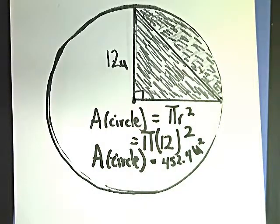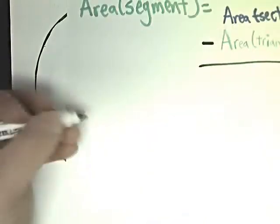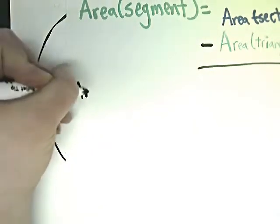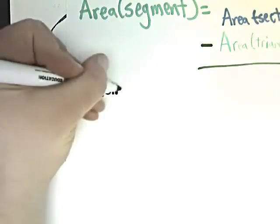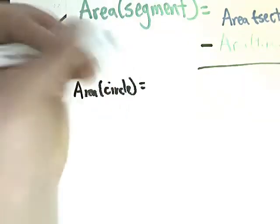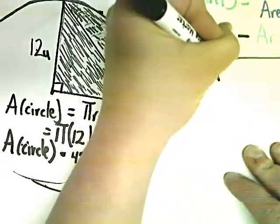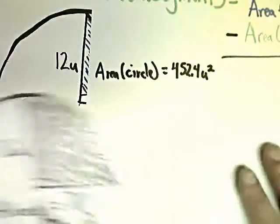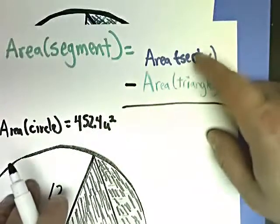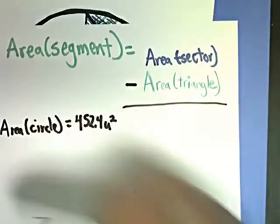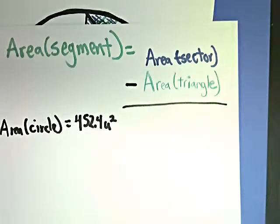Right now, I already know from before that our area of circle is 452.4 units squared. So I'll make a little note to myself that the area of the whole circle is 452.4 units squared. That's not specifically mentioned in the problem, but in the next section we're going to talk about how to find the area of the segment, so it's going to become more and more important as things go on.